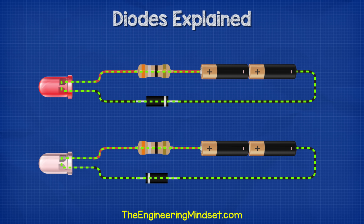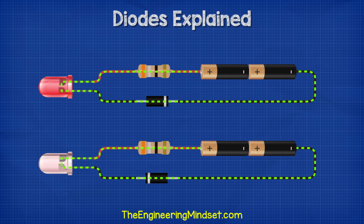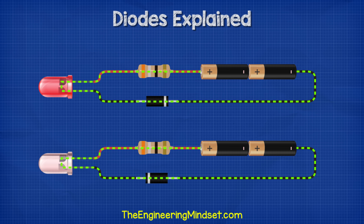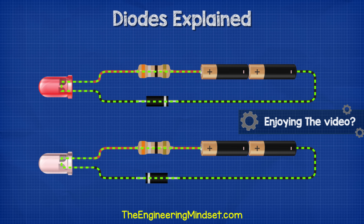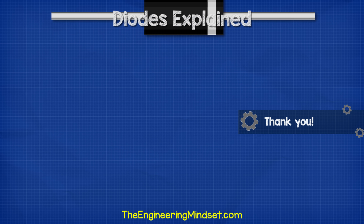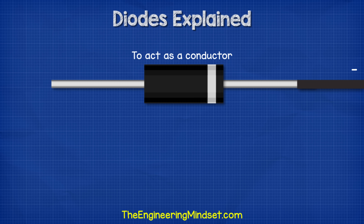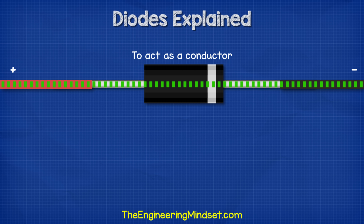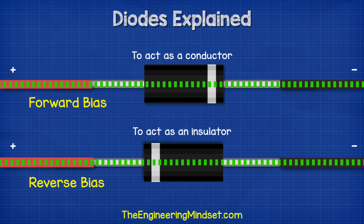If we connect a diode into a simple LED circuit like this one, we see that the LED will only turn on when the diode is installed the correct way, because it allows current to flow in only one direction. Depending on which way the diode is installed it will act as either a conductor or an insulator. When the stripe end is connected to the negative and the black end is connected to the positive, current is allowed to flow — we call this the forward bias. If we flip the diode it acts as an insulator and current can't flow — we call this the reverse bias.